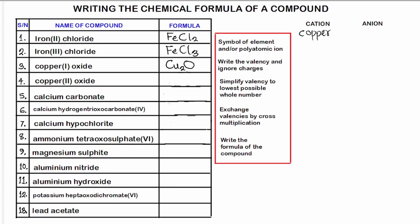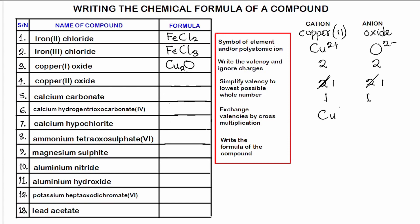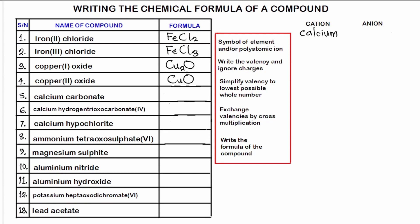Number four: copper(II) oxide. The symbol for copper(II) is Cu²⁺ and oxide is O²⁻. The valency of copper is 2 and oxide is 2. We can simplify 2:2 to 1:1. Cross-multiplying 1 and 1 gives CuO — the chemical formula for copper(II) oxide.